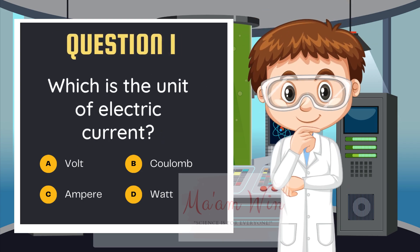Question number 1. Which is the unit of electric current? Letter A, volt. Letter B, coulomb. Letter C, ampere. Letter D, watt.